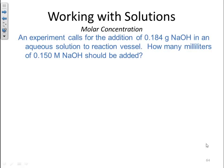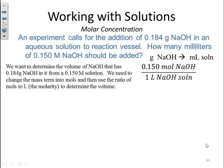The experiment calls for an addition of 0.184 grams of sodium hydroxide in an aqueous solution to a reaction vessel. How many milliliters of 0.150 molarity sodium hydroxide should be added? What we want to do is determine the volume of sodium hydroxide that has 0.184 grams of sodium hydroxide in it from a 0.150 molarity solution. We need to change the mass term into moles, and then use the ratio of moles to liter, that molarity, to determine the volume. In other words, we're trying to take grams of sodium hydroxide and convert it into milliliters of solution through using that molarity. We know there's 0.150 moles of sodium hydroxide for every liter of sodium hydroxide solution.